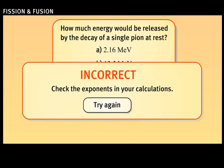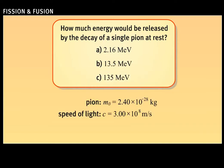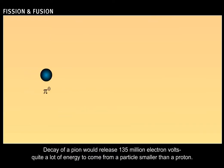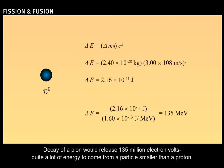Incorrect. Check the exponents in your calculations. Try again. Correct. Decay of a pion would release 135 million electron volts. Quite a lot of energy to come from a particle smaller than a proton.